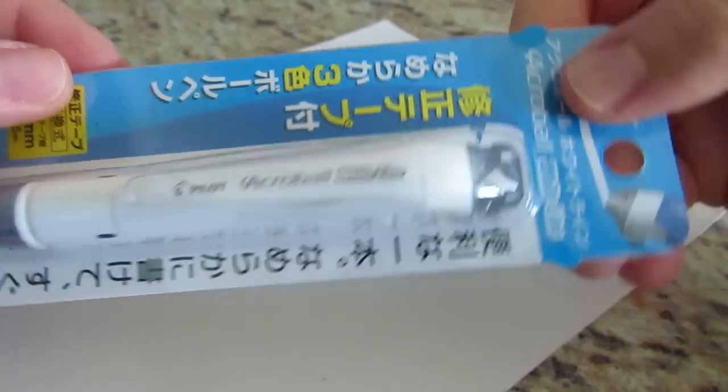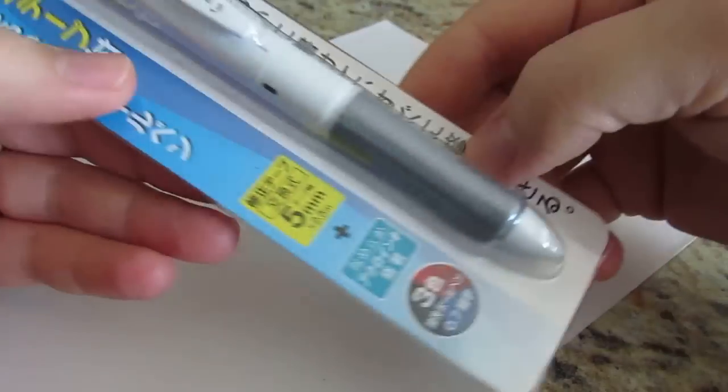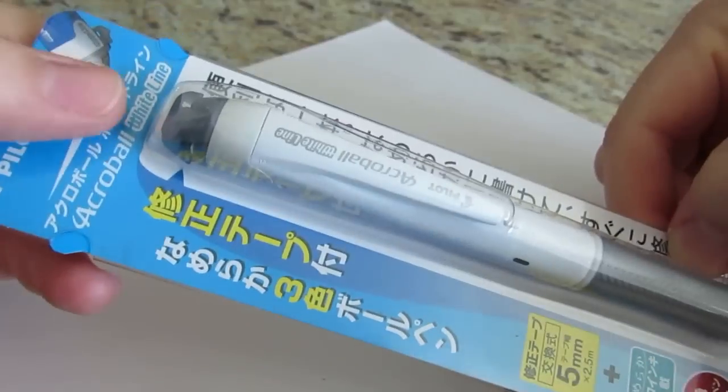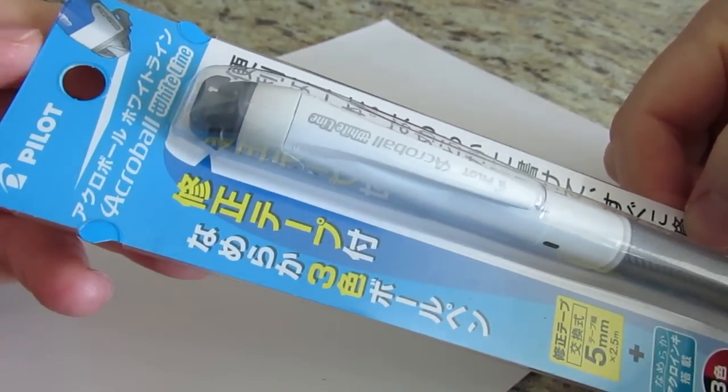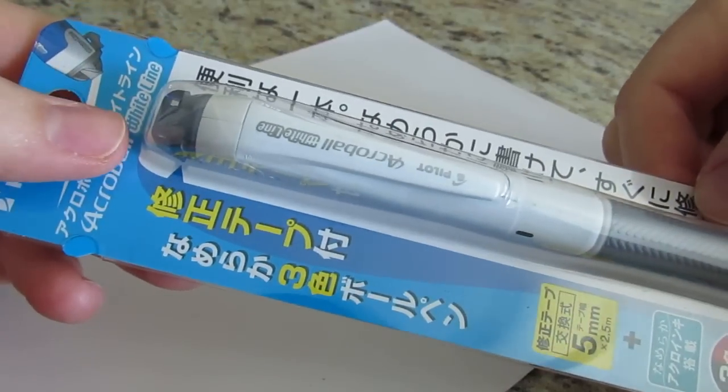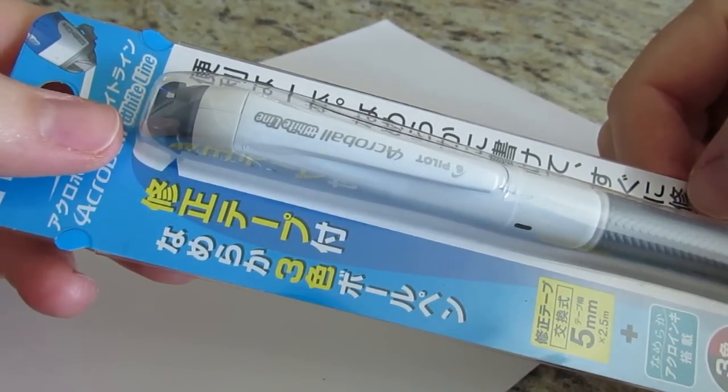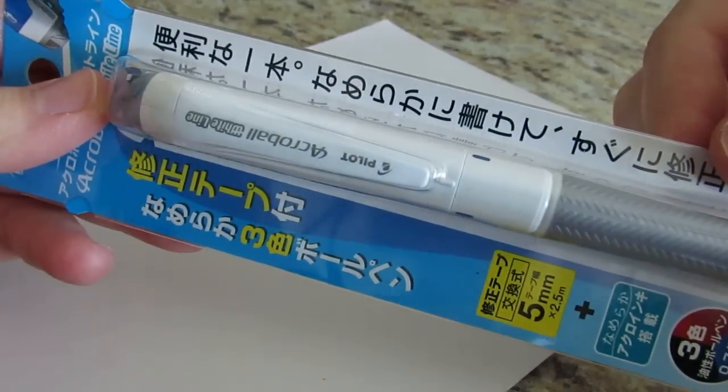It is a Pilot Acroball White Line and they come in different colors. It's a multi-pen that has correction tape in the top. They were sold out on JetPens pretty immediately. I think they come in pink and blue, black, green, maybe orange and white.